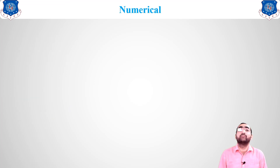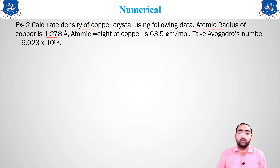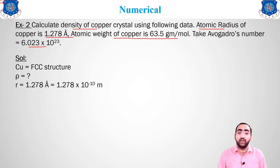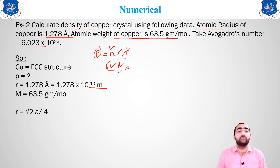Now let us discuss another numerical: calculate the density of a crystal structure using the following data — atomic radius 1.278 Angstroms, atomic weight 63.5, Avogadro's number 6.023 × 10²³. The material is copper, which is an FCC structure. Density is unknown. We have radius, atomic weight, and Avogadro's number. Using ρ = nM / (V · Nₐ), we first need to find the volume.